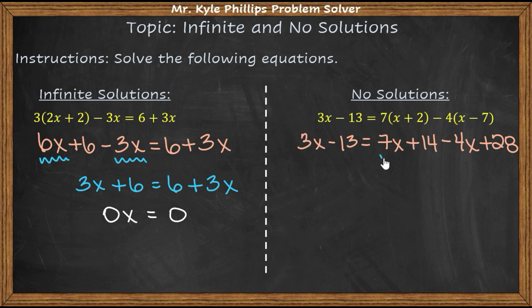So on the right hand side, I'm going to combine this 7x with this negative 4x and I'm going to combine this 14 with this 28. So here I have 3x minus 13. 7x minus 4x is 3x. 14 plus 28 is going to be 42.